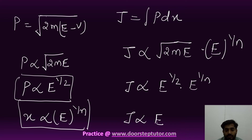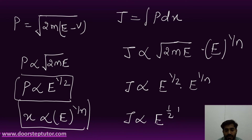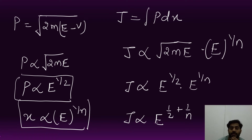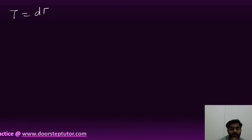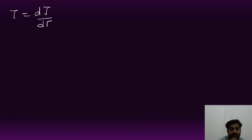Combining the exponents, J is directly proportional to E^(1/2 + 1/n). We can now easily differentiate this with respect to E to get the time period. Since time period T = dJ/dE, we differentiate E^(1/2 + 1/n) with respect to E.